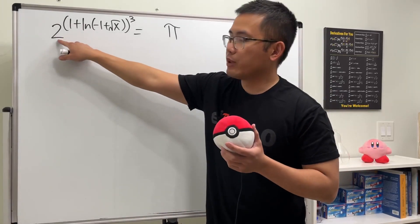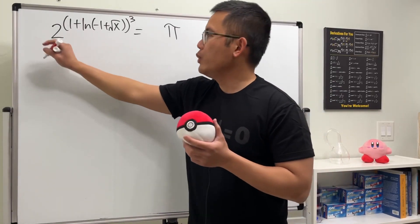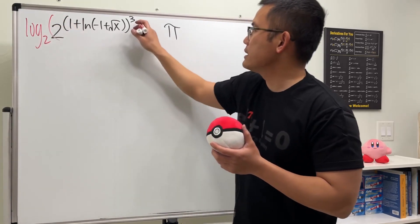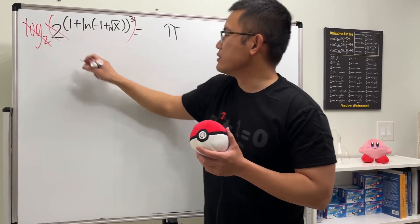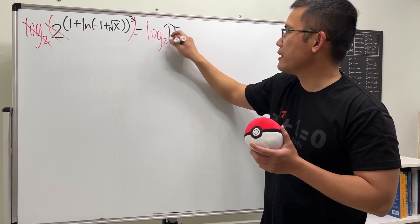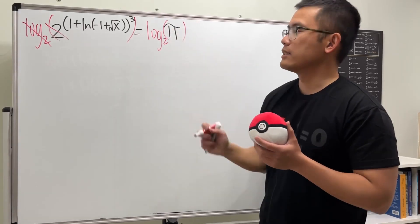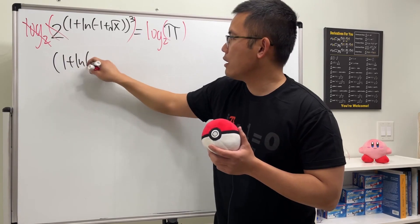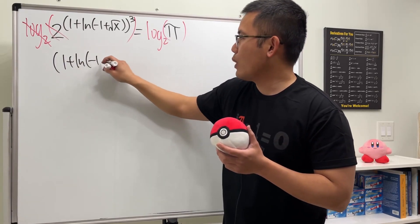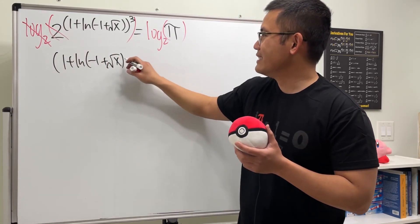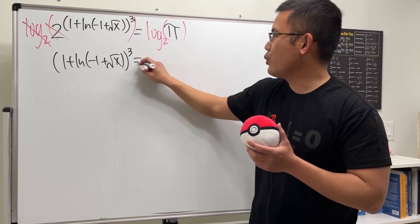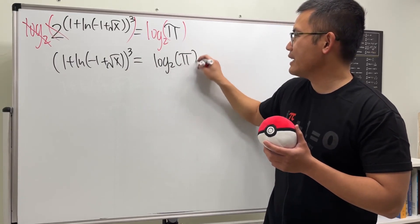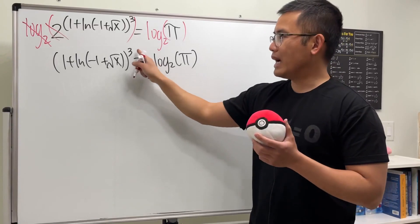First, we need to get rid of the 2 by applying log base 2 on both sides, so that this and that cancel. Don't forget to do the same on the other side as well. We'll have parentheses with one plus ln of negative one plus square root of x, all to the third power, equals log base 2 of pi.